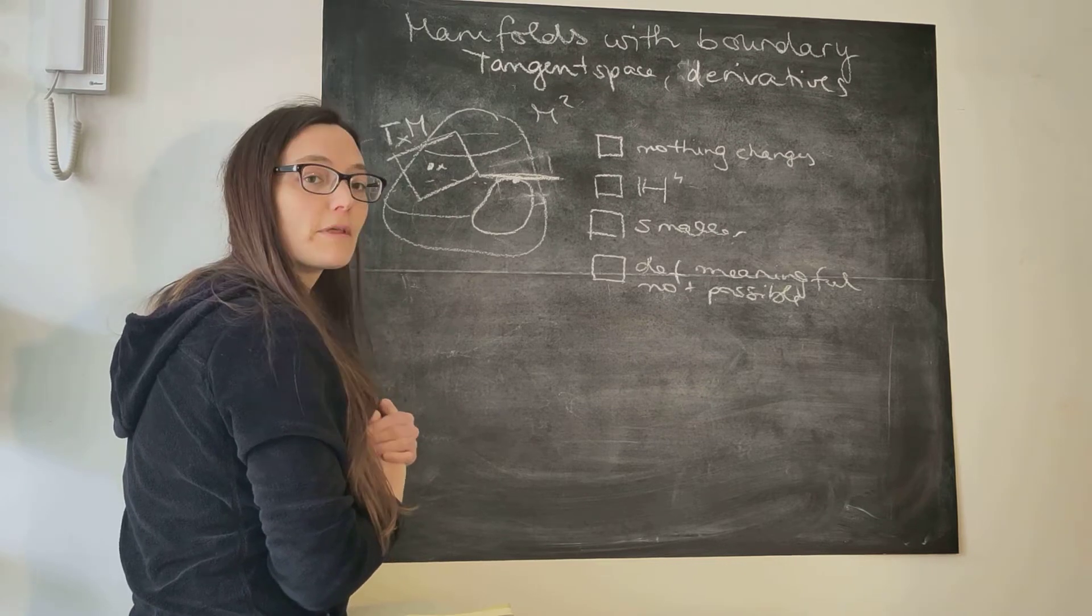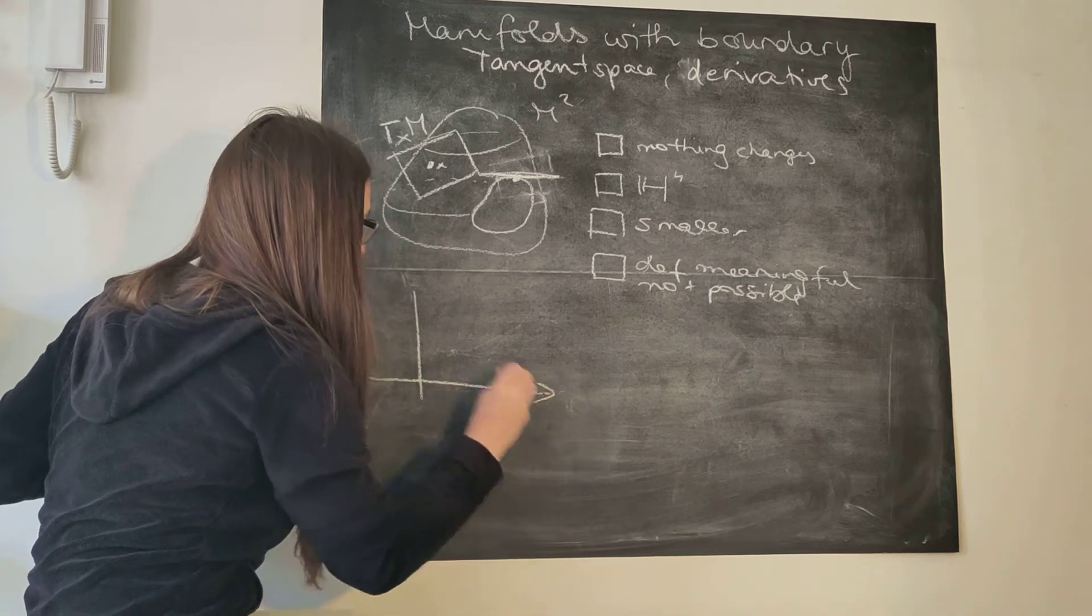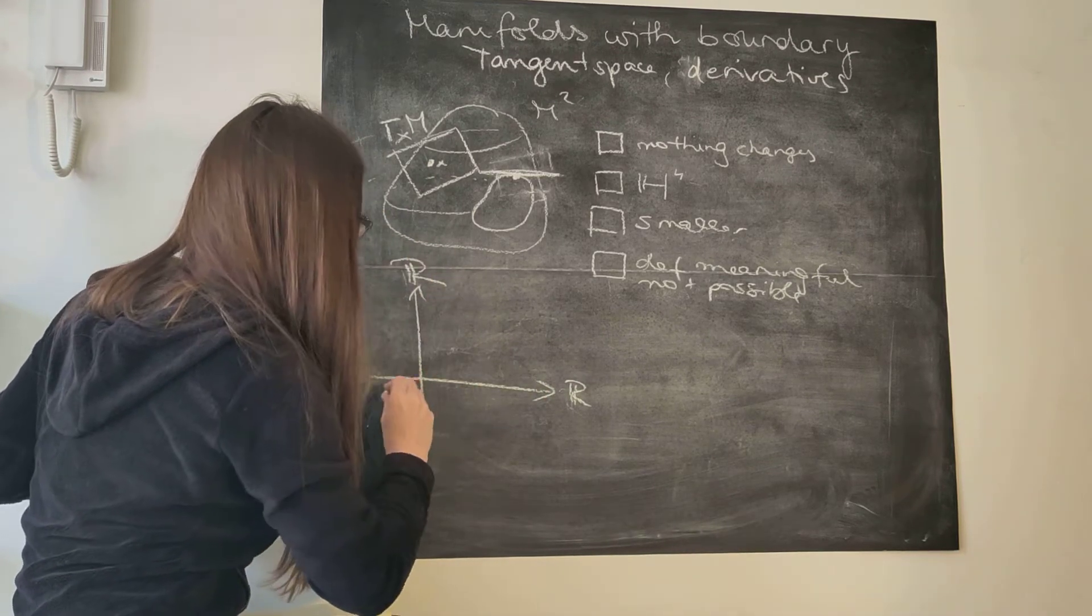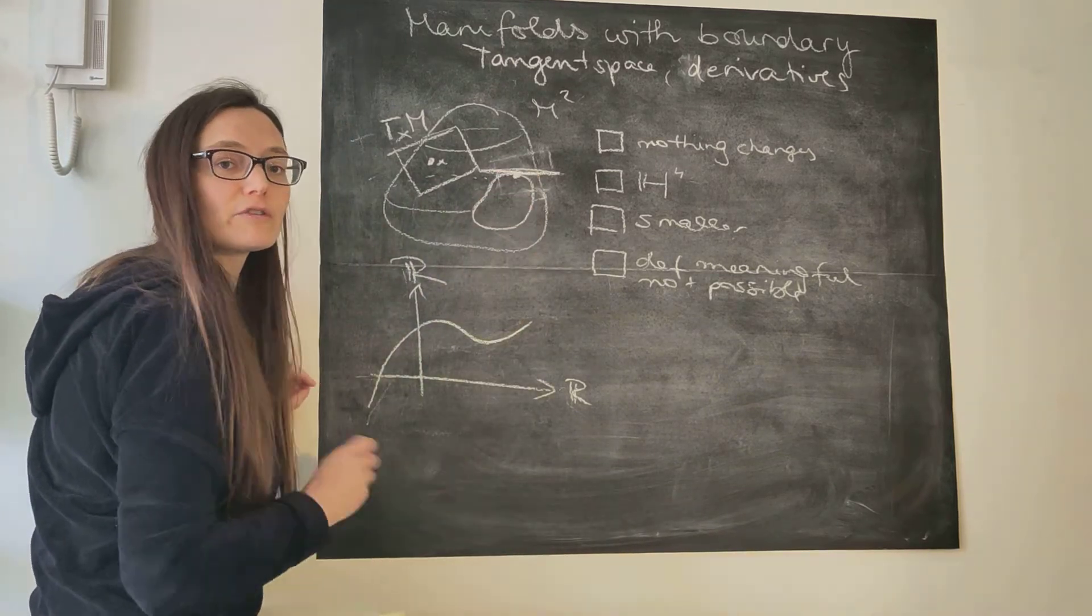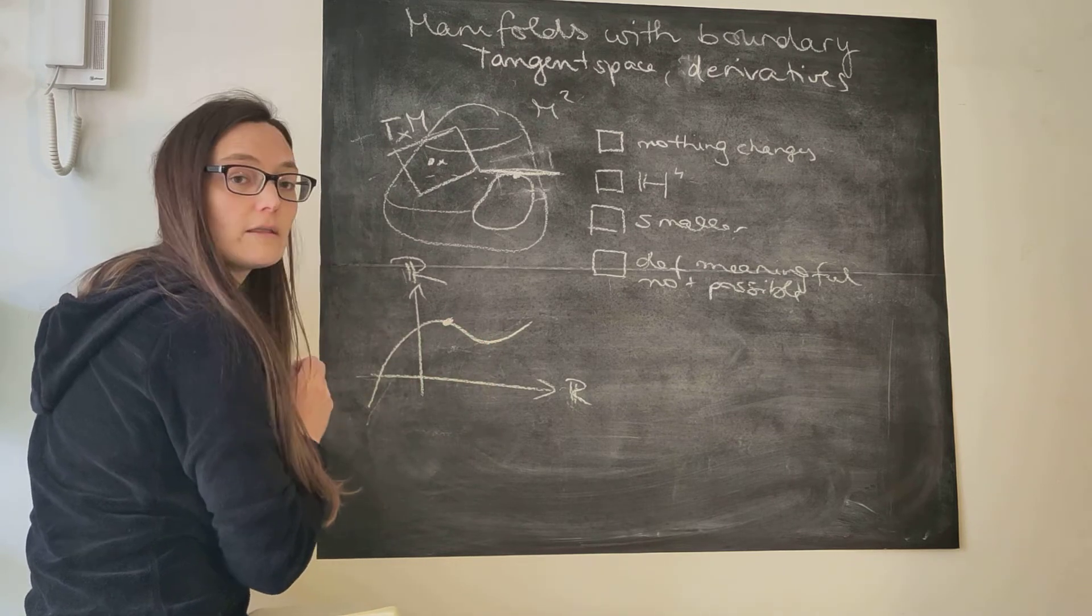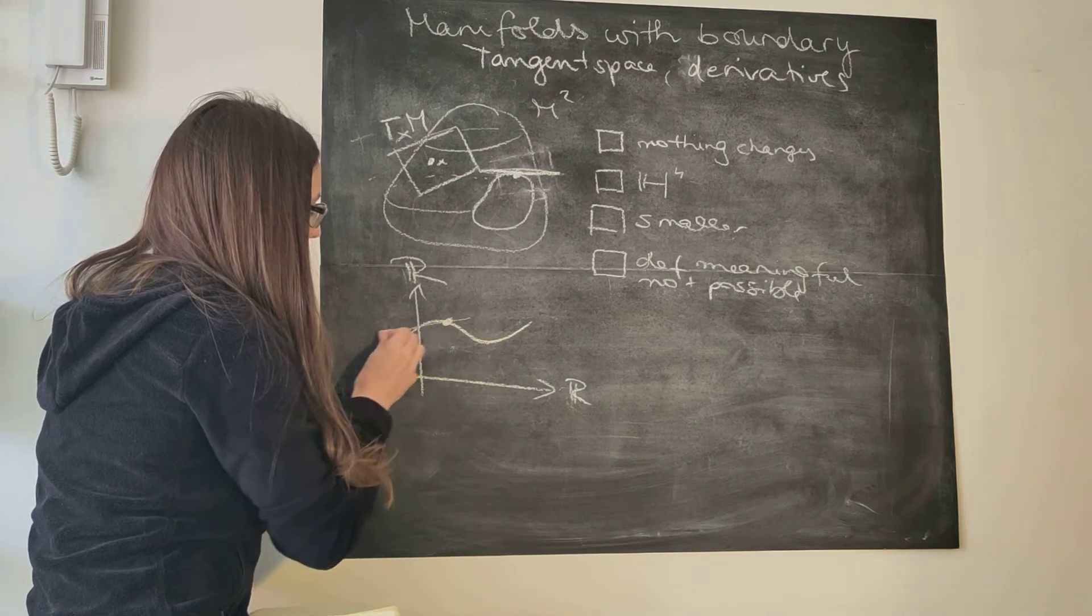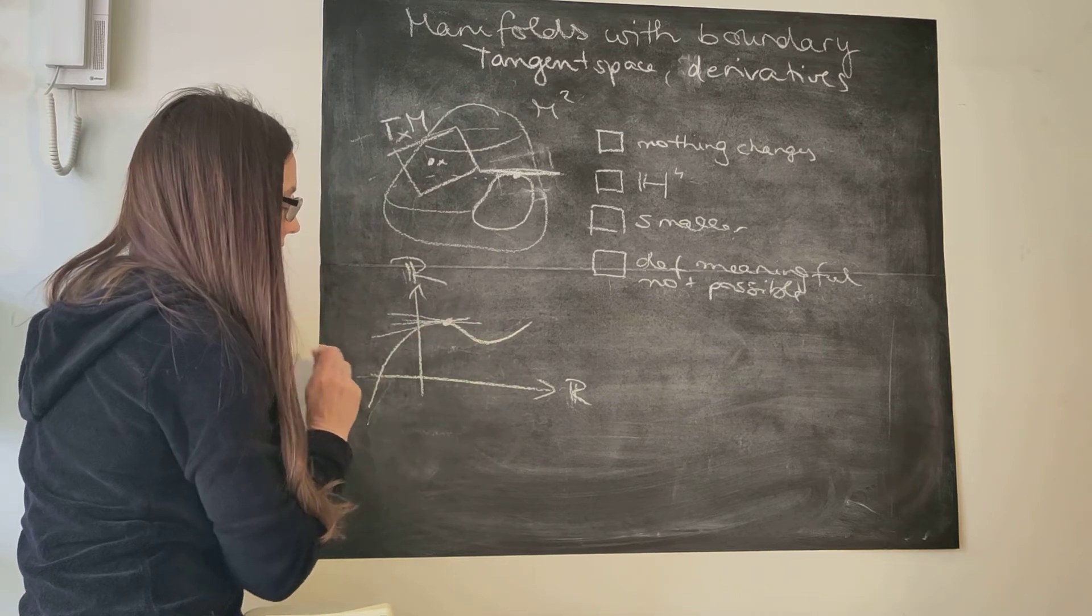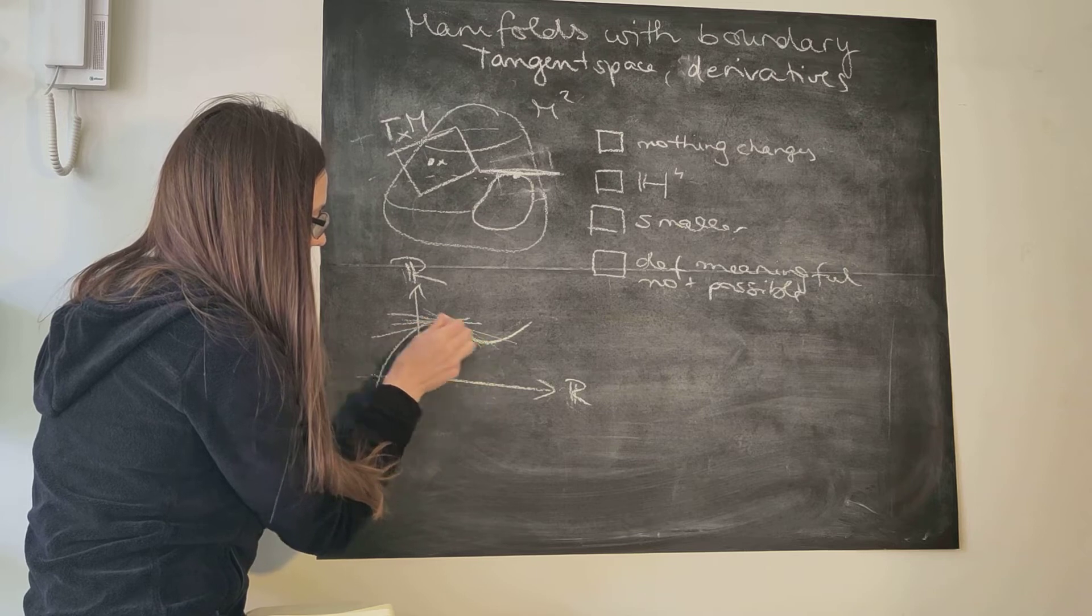For that, let's go back to the simple case we have seen way back in the day, how to define derivatives, namely functions from R to R. How you define a derivative in a point is you take the limit of the slopes of the secants through points closer and closer from the left and from the right.